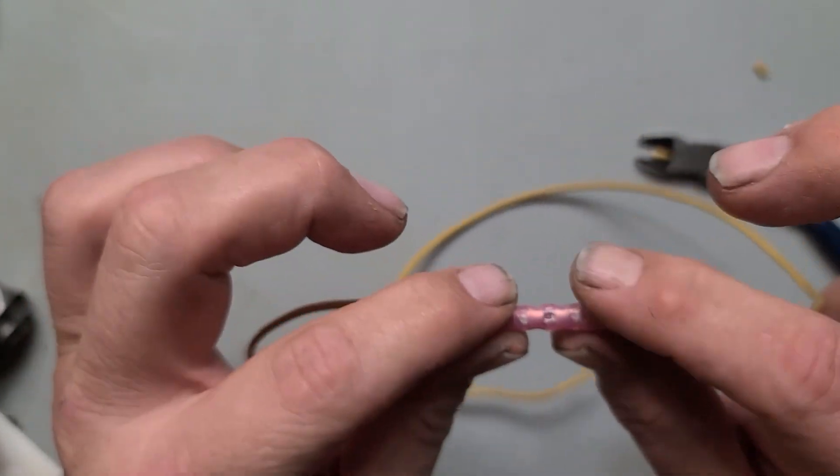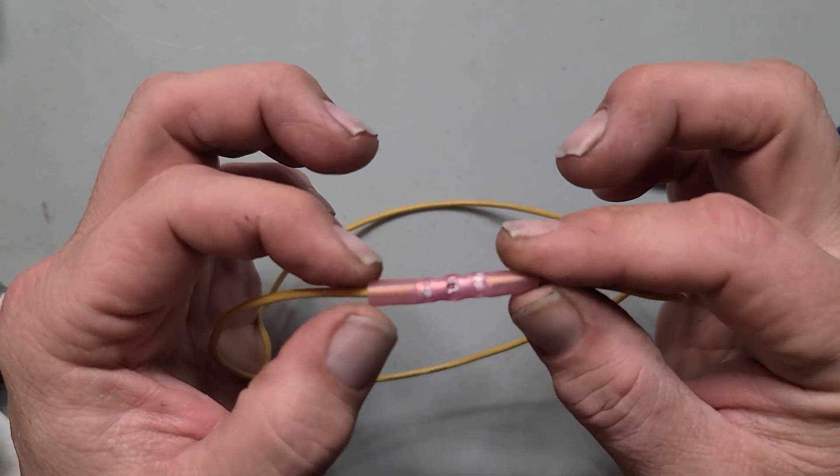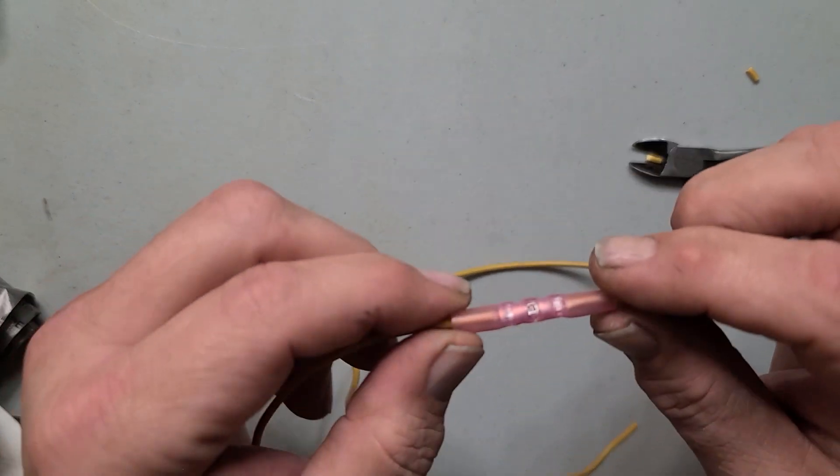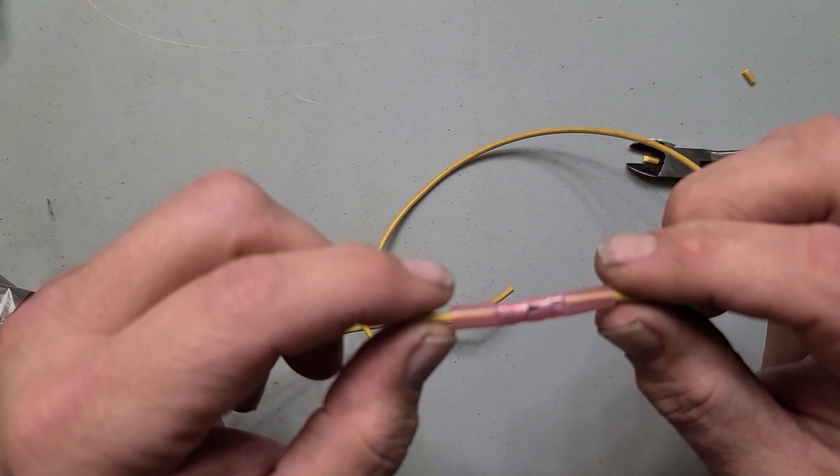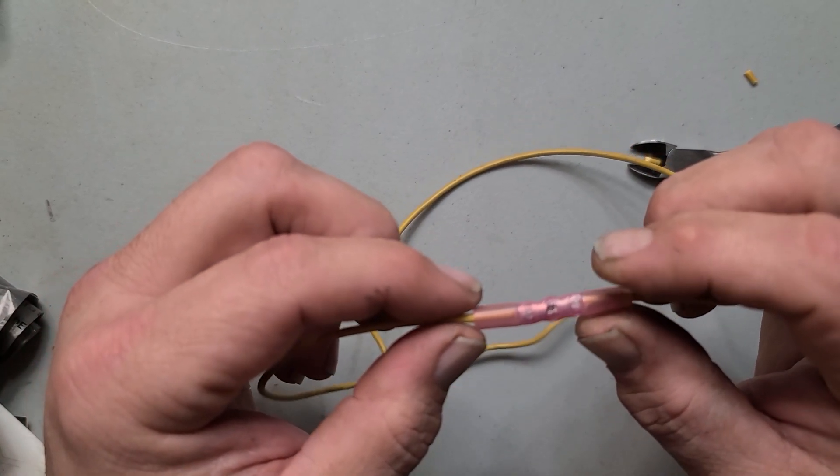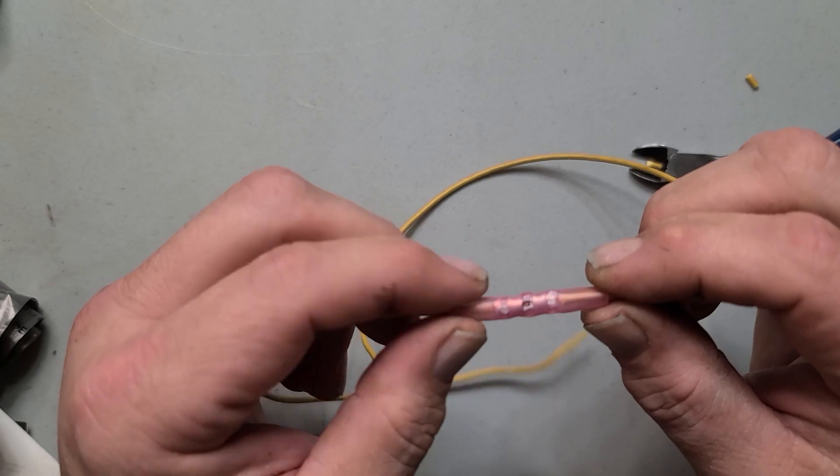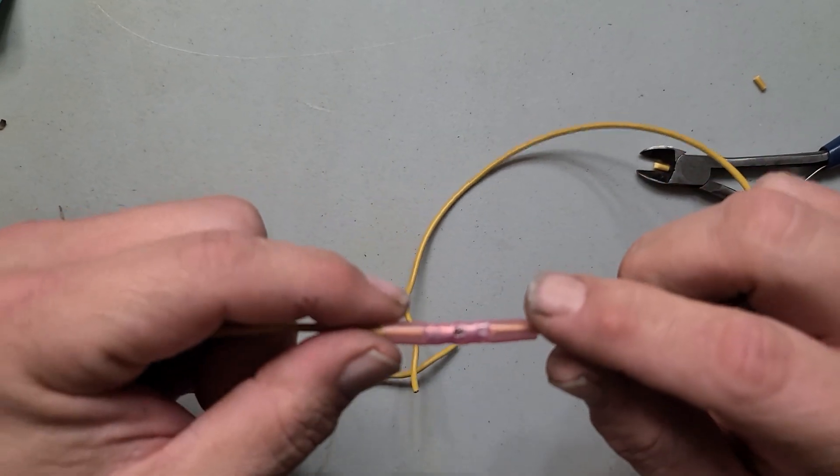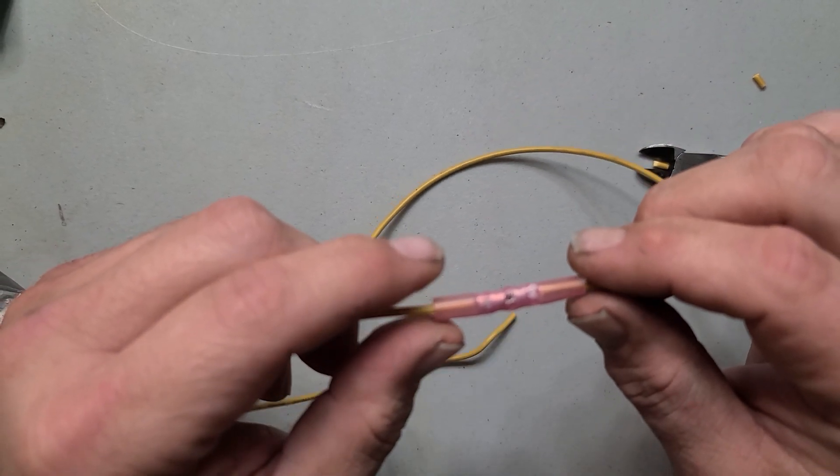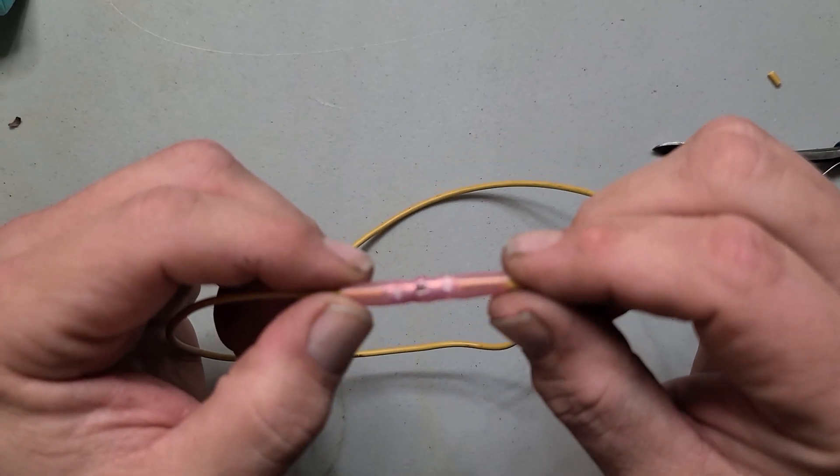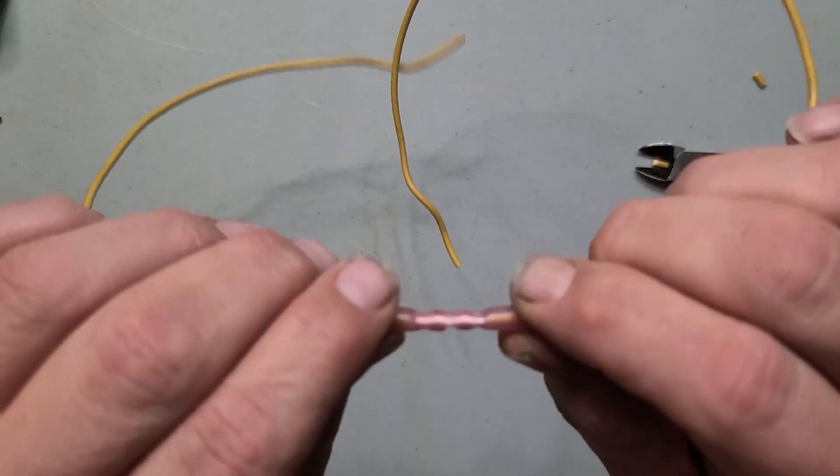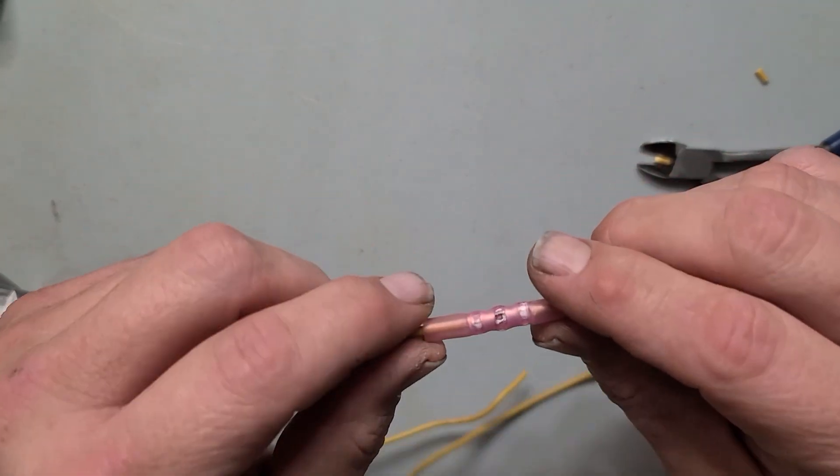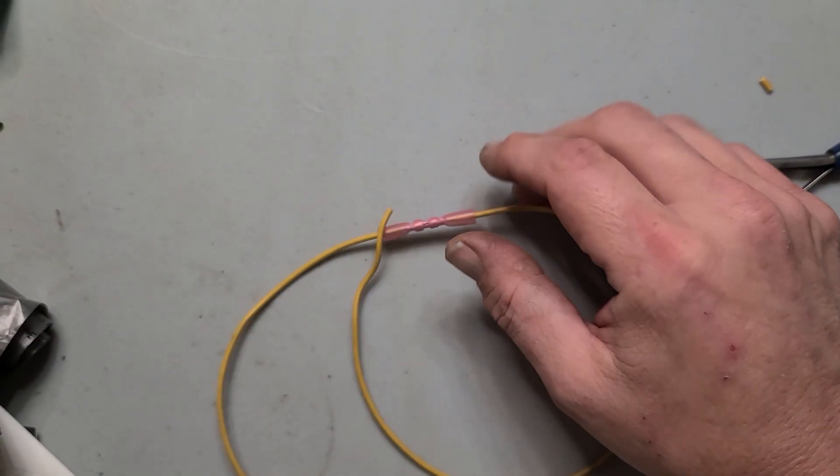In order to shrink these ends to make the weather seal we're going to use a heat gun. You can also use a lighter but that doesn't heat very evenly and it can be easy to overheat the wires and it leaves soot marks on this connector. If you have a small heat gun that would be great for this.